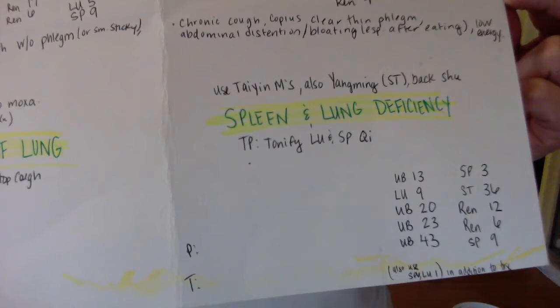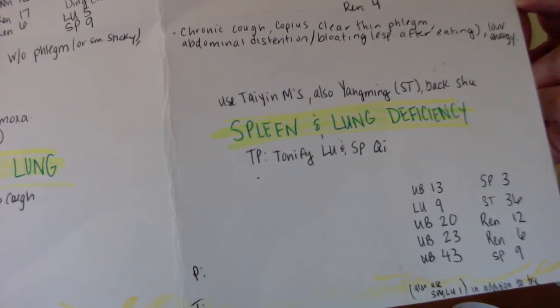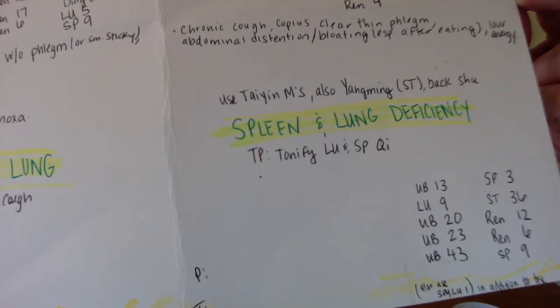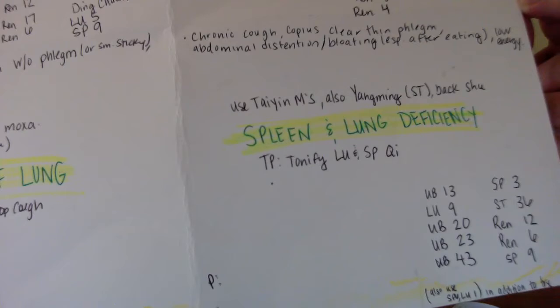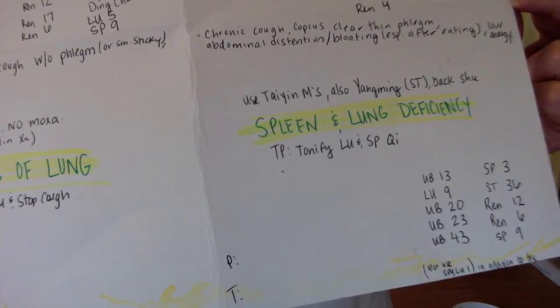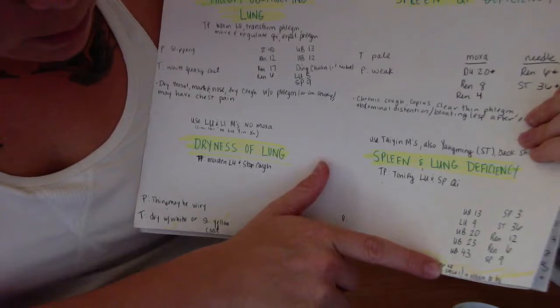Spleen and lung deficiency points combo: UB 13, UB 20, UB 23, UB 43, lung 9, spleen 9, spleen 3, stomach 36, ren 6, ren 12. Also use spleen 6 and lung 1 in addition to treatment.